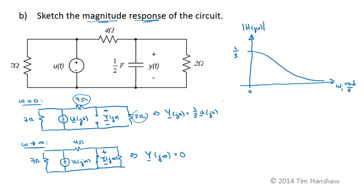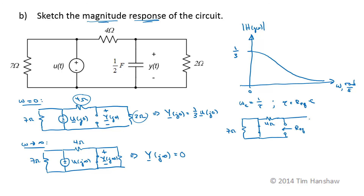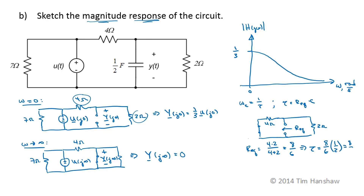Now we just need to find the cutoff frequency. For a first-order circuit, the cutoff frequency is 1 over the time constant, and for an RC circuit, the time constant is the equivalent resistance seen by the capacitor times the capacitance. To find R_EQ, we short the voltage source: the 7 ohm resistor is in parallel with a short circuit, making that entire side a short. So R_EQ is 4 ohms in parallel with 2 ohms, which is 4 times 2 over 4 plus 2, equal to 8 over 6. Thus tau equals 8 over 6 ohms times one-half farad, or 8 over 12 seconds, giving a cutoff frequency omega_c of 12 over 8 radians per second.